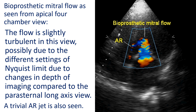Bioprosthetic mitral flow as seen from the apical 4-chamber view. The flow is slightly turbulent in this view, possibly due to the different settings of the Nyquist limit due to changes in depth of imaging compared to the parasternal long axis view. A trivial aortic regurgitation jet is also seen.